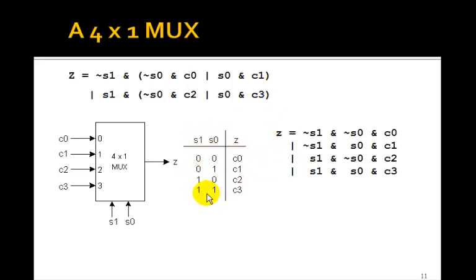You can really see it from this truth table where the minterm not s1 and not s0 is right here. And you just and it with c0, the input, or this minterm not s1 and s0 and c1 or s1 and not s0 and c2 or s1 and s0 and c3. So there's the logic equation for a 4 to 1 mux.